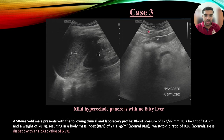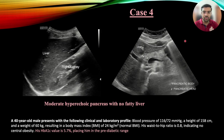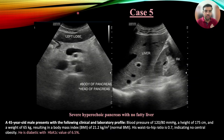Case 3 showed pancreatic echogenicity slightly higher than the left lobe of the liver — a case of mild hyperechoic pancreas with no fatty liver — and HbA1c was found to be 6.9%. In Case 4, pancreatic echogenicity was definitely increased compared with the liver but less than retroperitoneal fat — moderate hyperechoic pancreas — and the patient was in the pre-diabetic range. Case 5 showed definitely increased echogenicity of the pancreas compared with the left lobe and also greater than retroperitoneal fat — severe hyperechoic pancreas — and the patient was found to be diabetic.